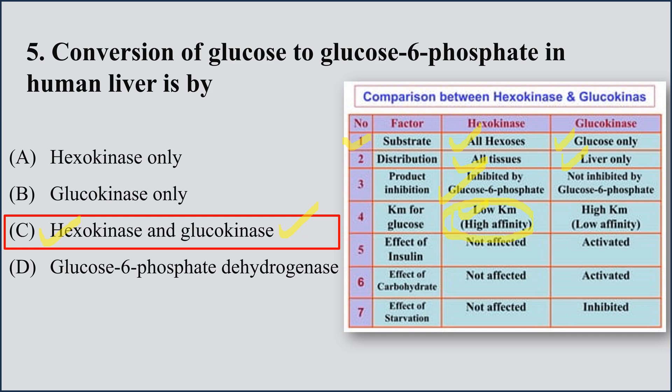Hexokinase has high affinity and can detect and act on low glucose concentrations. Glucokinase requires high glucose concentration and mostly acts after a meal. Effect of insulin: hexokinase is not affected by insulin, while glucokinase is activated by insulin. Effect of carbohydrate: hexokinase is not affected, while glucokinase is activated by carbohydrates — after a meal, glucokinase acts and its levels are high.